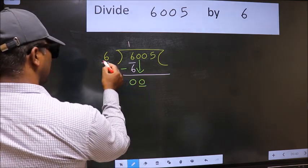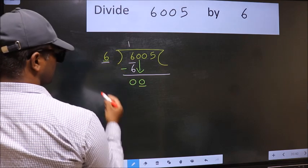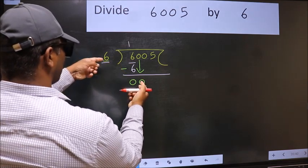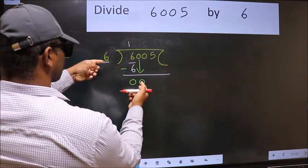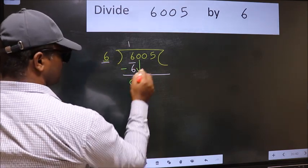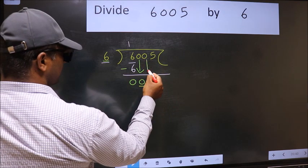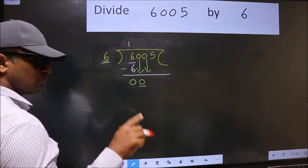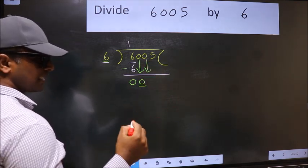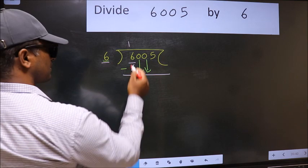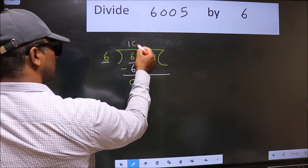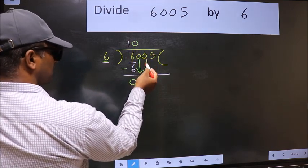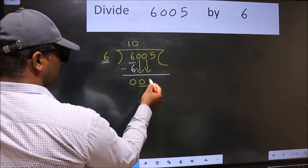Here we have 0 and here 6. 0 is smaller than 6. So, we should bring down the second number. And the rule to bring down the second number is we should put 0 here. Then only we can bring this number down.